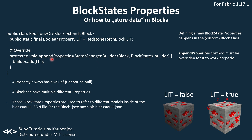You always need to override the appendProperties method and pass in your one or multiple block states into the builder.add method — that's very important. If you have multiple properties, just separate them with commas. A property always has a value — it can't be null. For a boolean property, it can either be false or true. A block can have multiple different block state properties, as we've seen with the button, door, and other blocks.